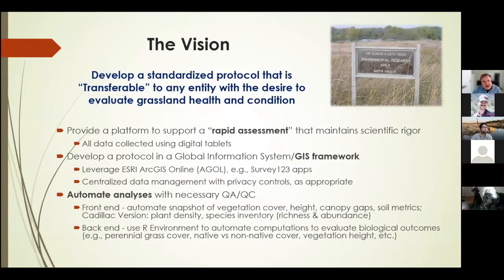Our shared GEM vision is to develop a standardized protocol that is transferable to any entity with a desire to evaluate grassland health and condition. We want to provide a platform to support a rapid assessment that maintains scientific rigor — acknowledging our real limitations on funding and staff. All data collected using digital tablets, with a GIS framework, centralized data management, automated analysis with QA/QC, and an automated front-end snapshot of vegetation cover, height, and canopy gaps, with back-end automated computations to evaluate biological outcomes.